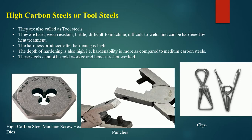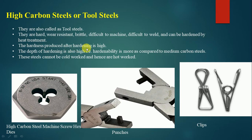High carbon steel contains more than 0.6% carbon, and all hyper-eutectoid steels fall into this category. Also called tool steels, they are hard, wear resistant, brittle, difficult to machine, difficult to weld, and can be hardened by heat treatment with very high resulting hardness — incomparable to low and medium carbon steels.